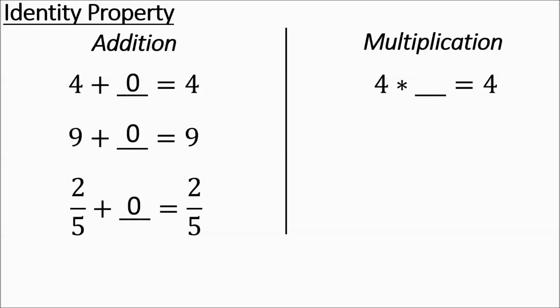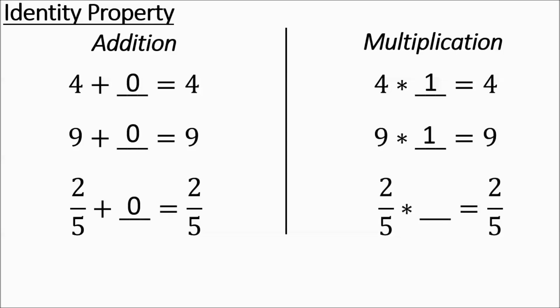Over here for multiplying, you have 4 times some number equaling 4 — that's going to be a 1. Then you have 9 times something equaling 9 — that's going to be a 1 again. And then we have 2 fifths times something equaling 2 fifths — that's still going to be a 1.